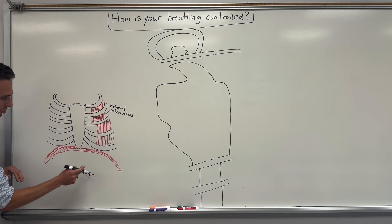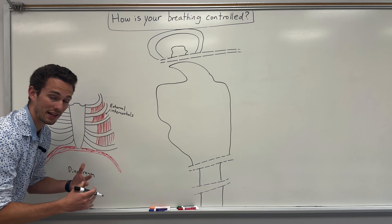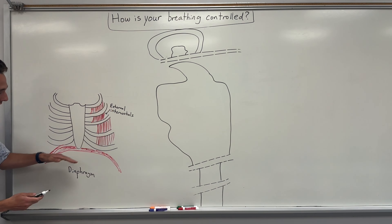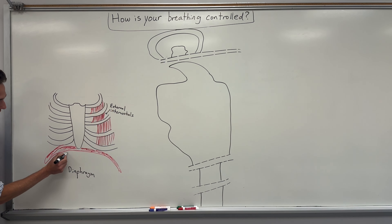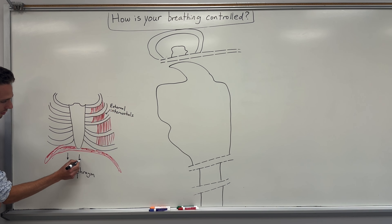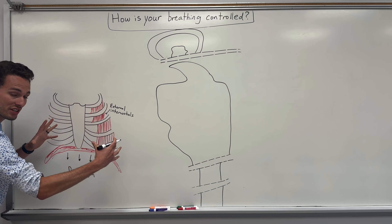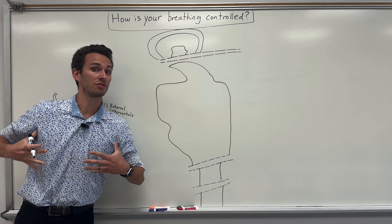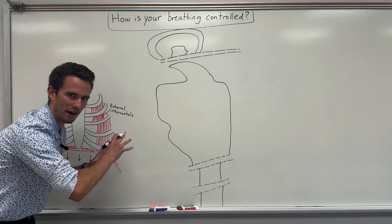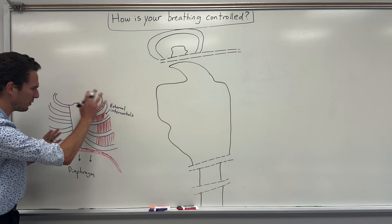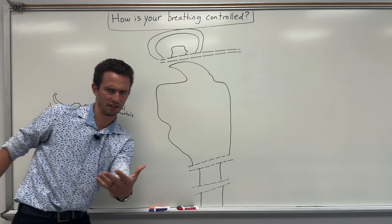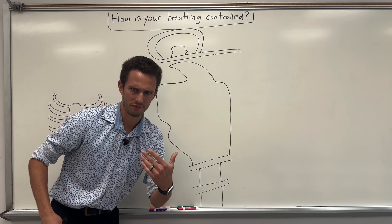When these two muscles contract together, your rib cage will be elevated, and your diaphragm will actually contract downwards, thus expanding that thoracic cavity and allowing your lungs to fill with air. Now that is if they contract — but how do we actually tell them to contract? You voluntarily did that, so let's find out.